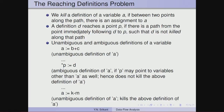A definition d reaches a point p if there is a path from the point immediately following d to p such that d is not killed along that path. There may be many paths from d to p, but we only consider the existence of just one path — reaching along any one path is sufficient. If there is no path from the definition to point p, then the definition is not reachable.